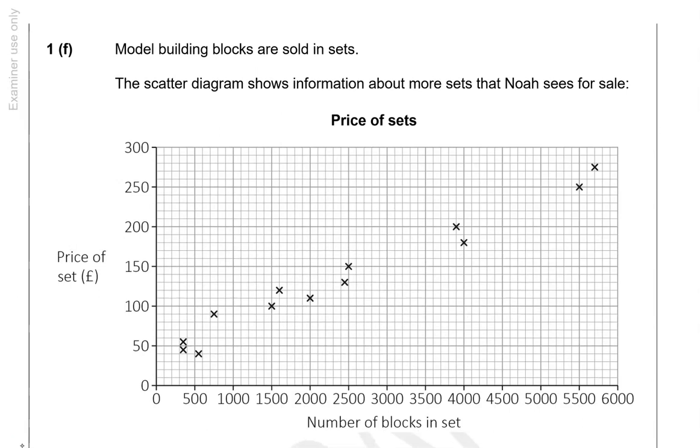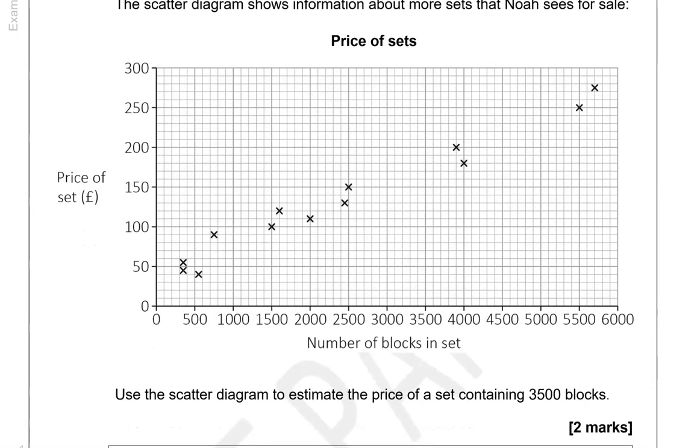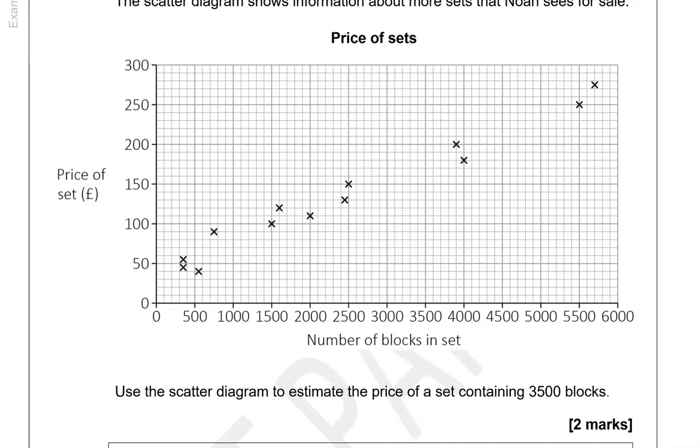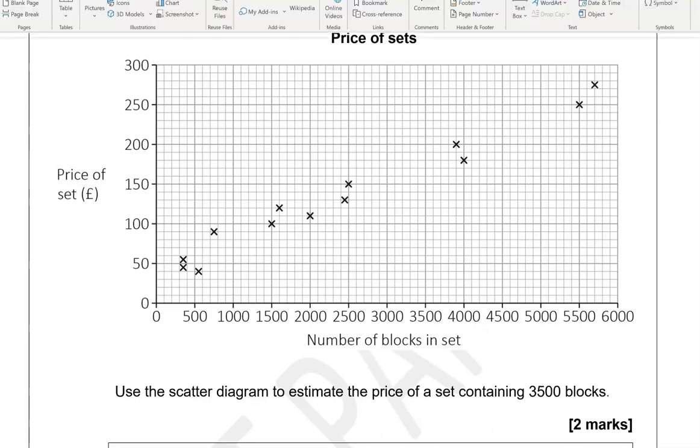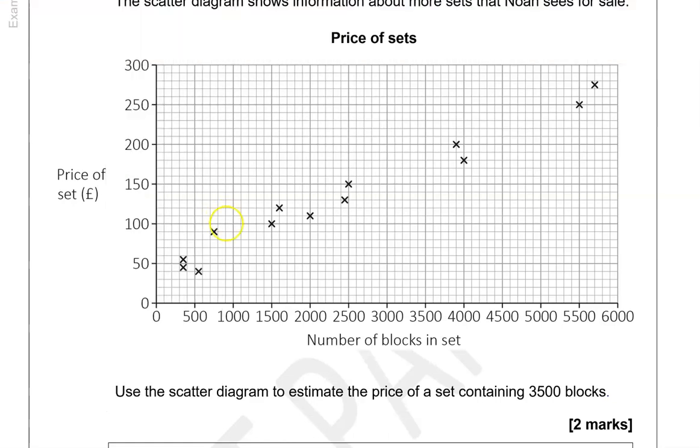Model building blocks are sold in sets. The scatter diagram shows information about more sets that Noah sees for sale. Use the scatter diagram to estimate the price of a set containing 3,500 blocks. So we're going to need to draw a line of best fit. So a line where we've got equal distance, roughly, between the points on each side of it. It doesn't need to be perfect, but roughly.